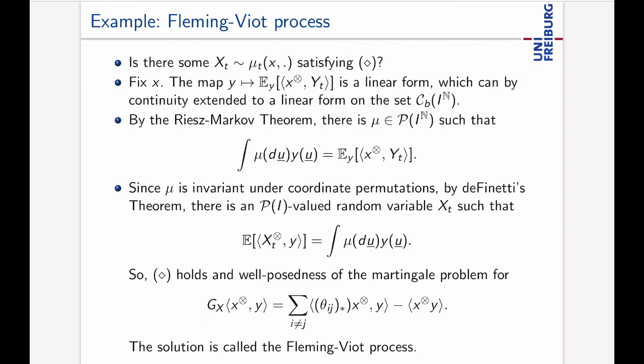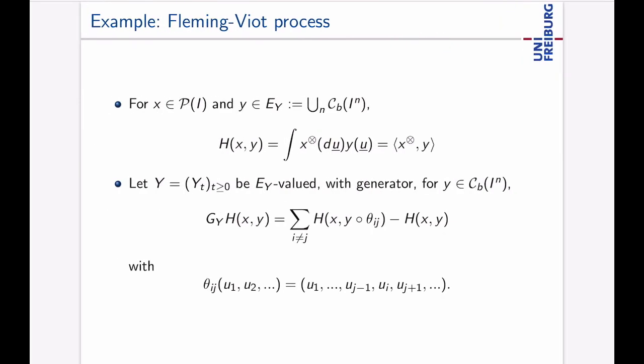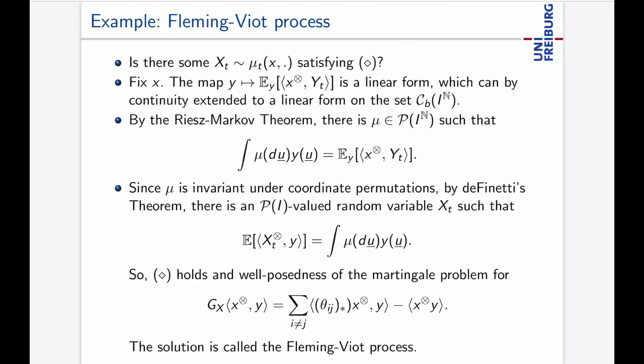And that now we are here that's exactly what we want to have the distribution of Xt is for this generator here which is in fact the same generator as we had here on the last slide but just written a bit differently and the solution is called the Fleming-Viot super process and we did not need any approximation arguments just the generator.